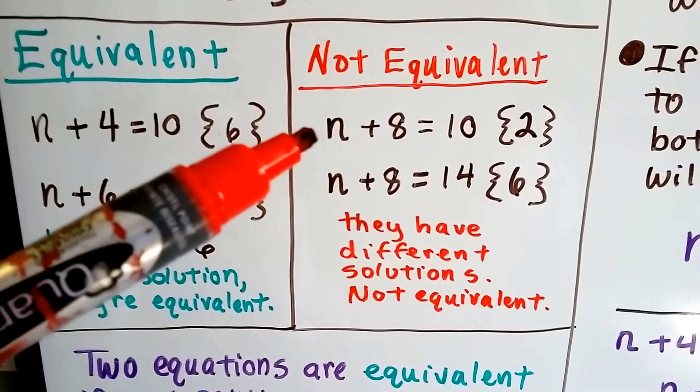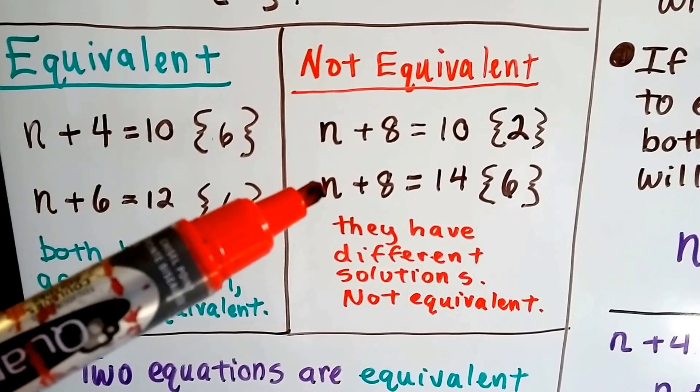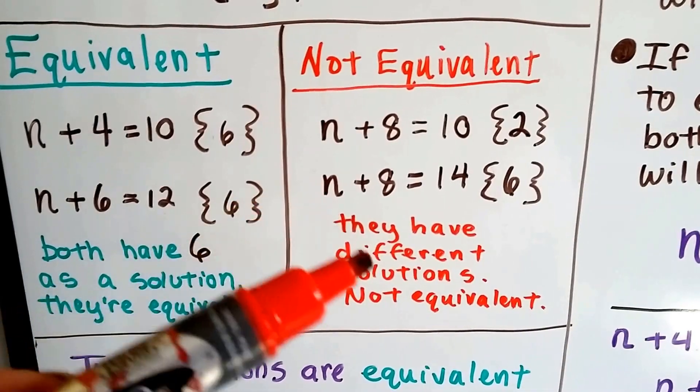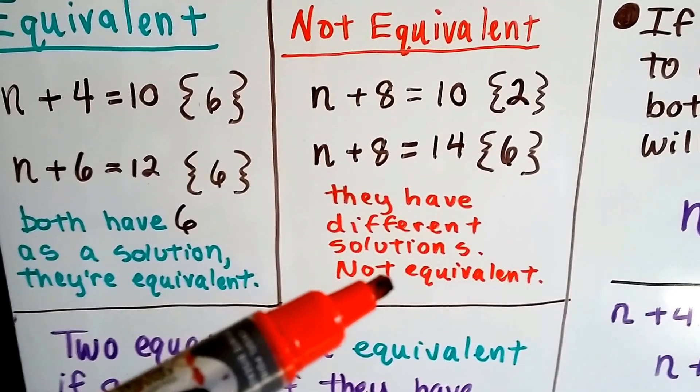Now look at these two. n plus 8 equals 10, so that would be a 2. And n plus 8 equals 14, that would be a 6. Because that's a 2 and that's a 6, they have different solutions that are not equivalent.